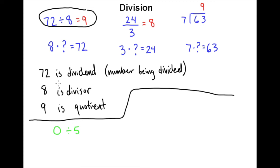Well to play the same game we did up here with all of these, what I could be asking myself is 5 times what equals 0. So what would have to go in place of this question mark in order for 5 times something to be 0?